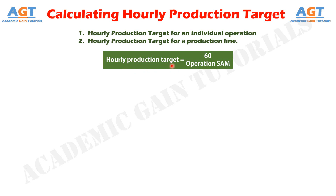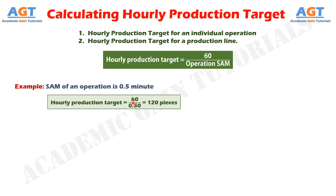Let's take an example. The standard allowed minute of an operation is 0.5 minute. Then what would be the hourly production target? Using this formula, the hourly production target would be 60 divided by 0.50 minute per operation, which gives us a hourly production target of 120 pieces. Note that this target is calculated at 100% efficiency.